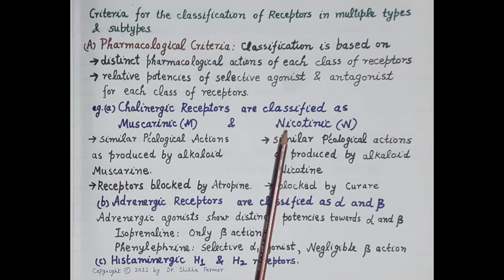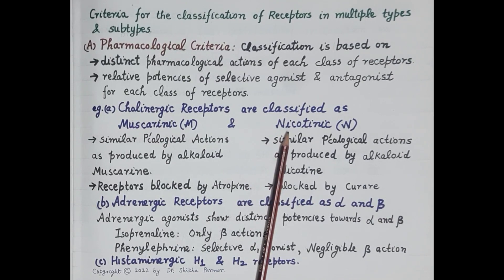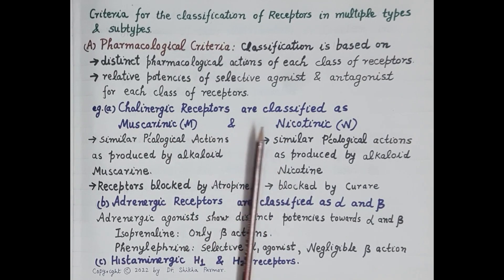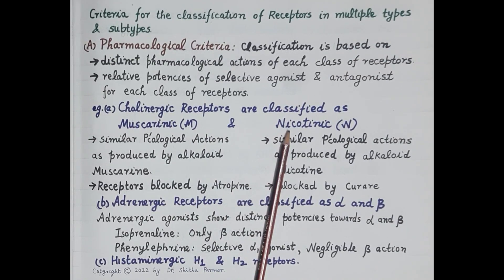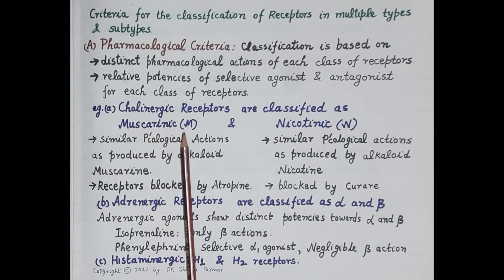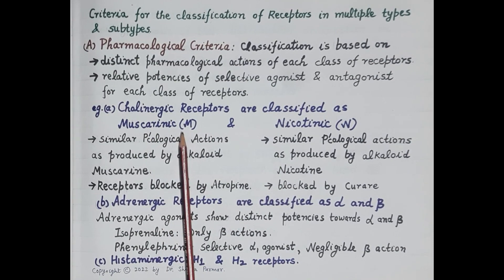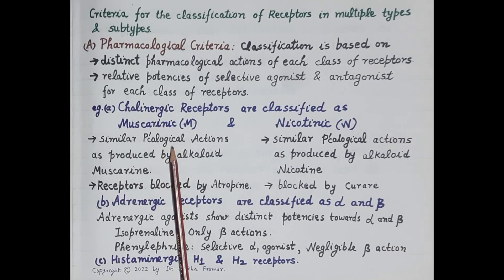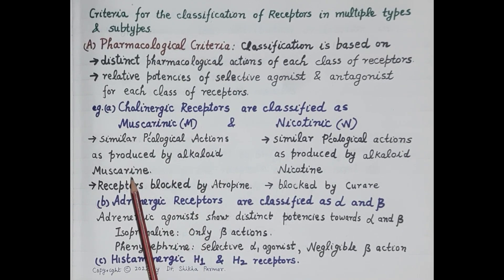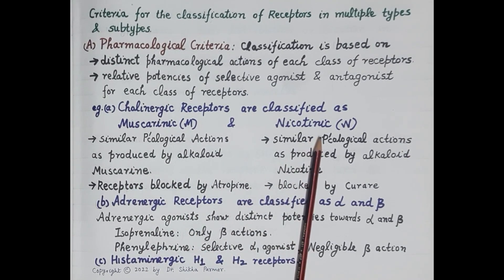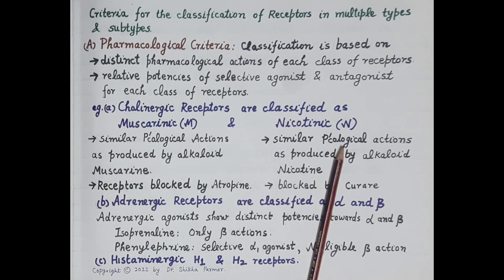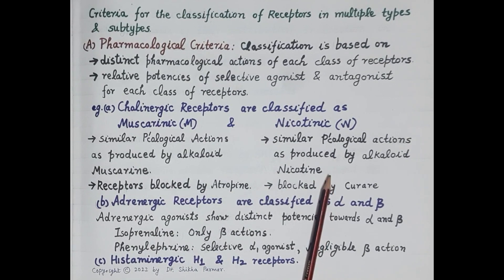The endogenous ligand for both muscarinic and nicotinic receptors is acetylcholine, which is an agonist for both. When acetylcholine binds to muscarinic cholinergic receptors, it produces pharmacological actions mimicked by the alkaloid muscarine. When acetylcholine binds to nicotinic receptors, it produces pharmacological actions produced by the alkaloid nicotine.